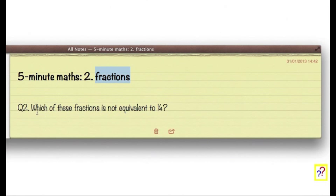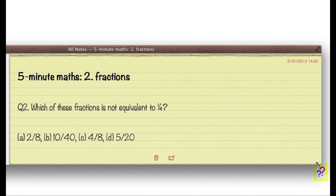The question reads as follows. Which of these fractions is not equivalent to a quarter? And the options are two eighths, ten fortieths, four eighths and five twentieths.